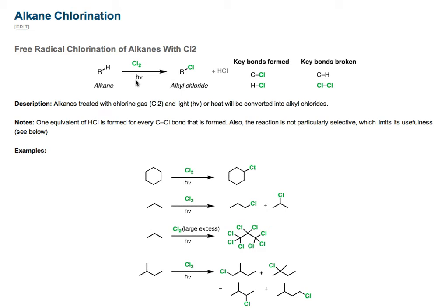Today we're going to shine a light upon chlorine gas, and in the process alkanes will be transformed into alkyl chlorides, along with hydrochloric acid. Alkanes treated with chlorine gas and light will go to alkyl chlorides along with one equivalent of HCl gas.